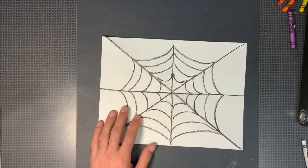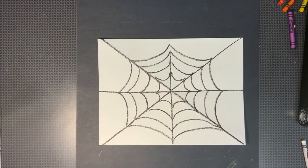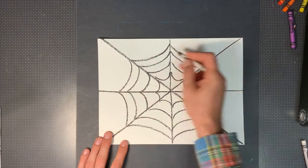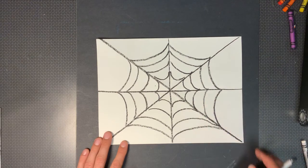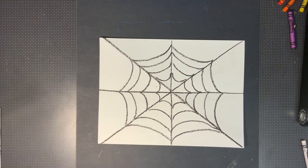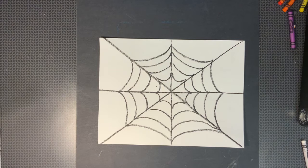Okay we have all our spider webs done. You could add more if you'd like wherever you want to fill the whole paper or you could leave these long lines out. That's up to you. Now what we're going to do is we're going to draw our spider on our web. So when I draw my spider I'm going to use simple shapes.